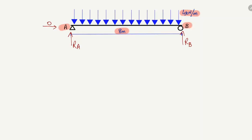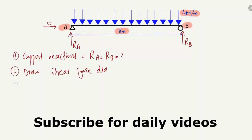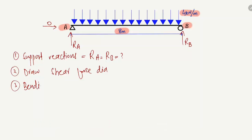First of all, we have to find out the support reactions — that means finding RA and RB — and then we draw the shear force diagram, followed by the bending moment diagram. So we have to analyze this simply supported beam. Finding the support reactions is the first step, and it is very easy.